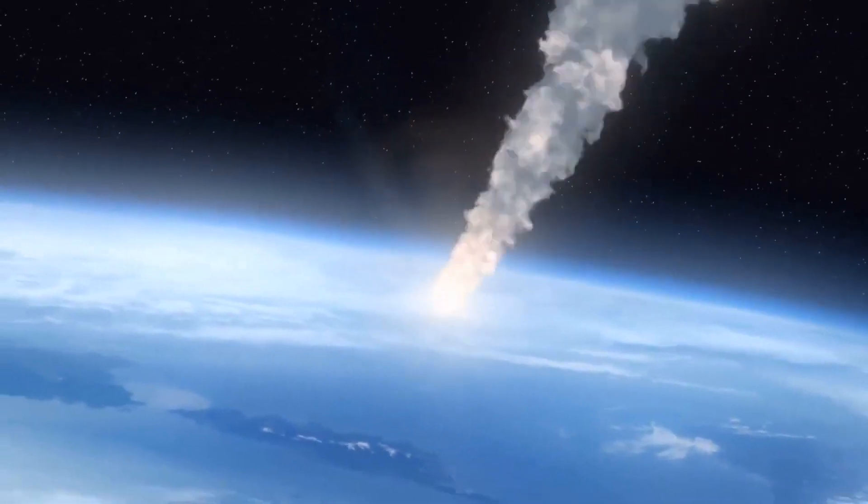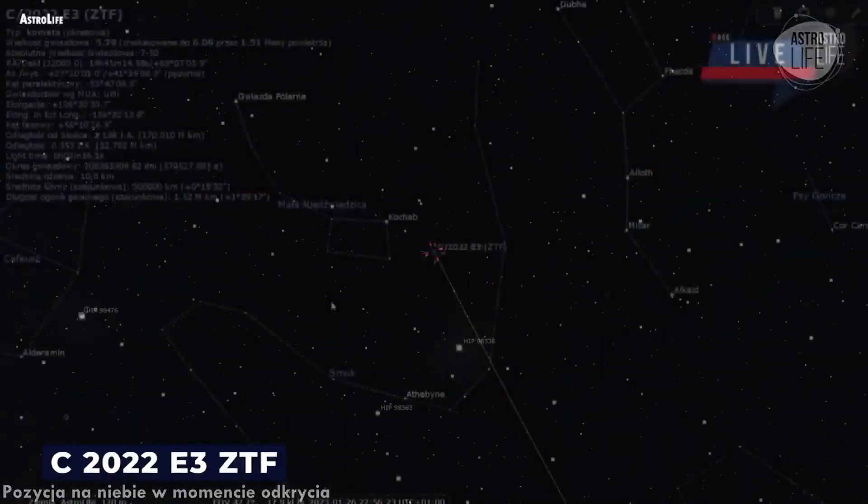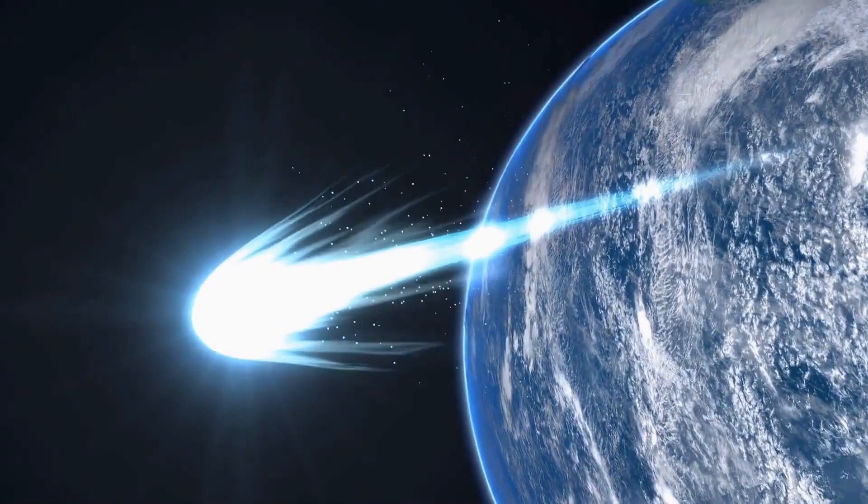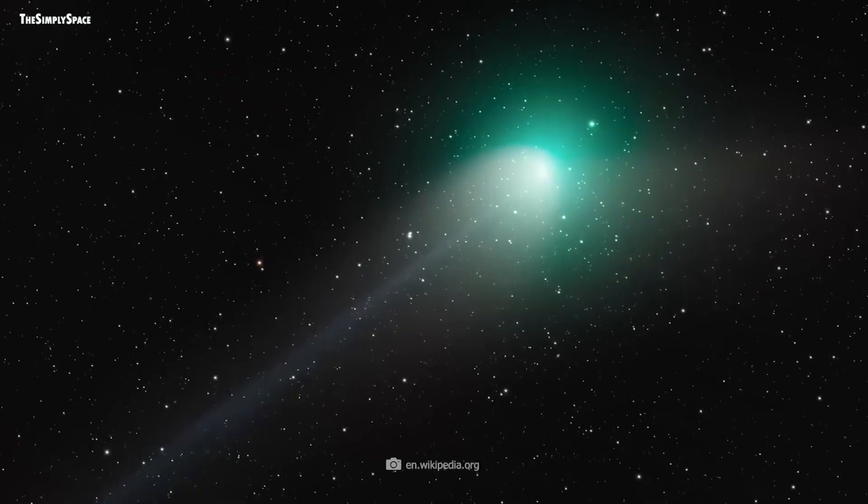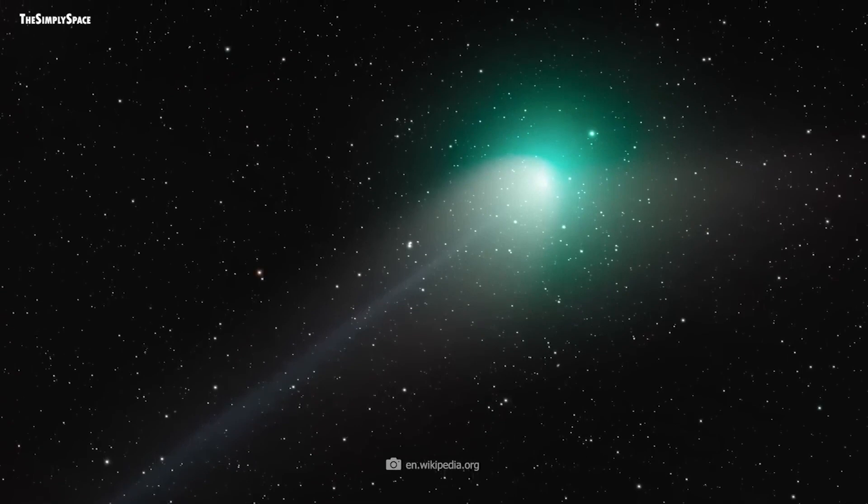One particular comet, officially named C2022E3 Tunin Atlas, has recently grabbed astronomers' attention. Discovered in March 2022 at the Zwicky Transient Facility in California, it has earned the nickname The Green Comet due to its vibrant greenish hue.